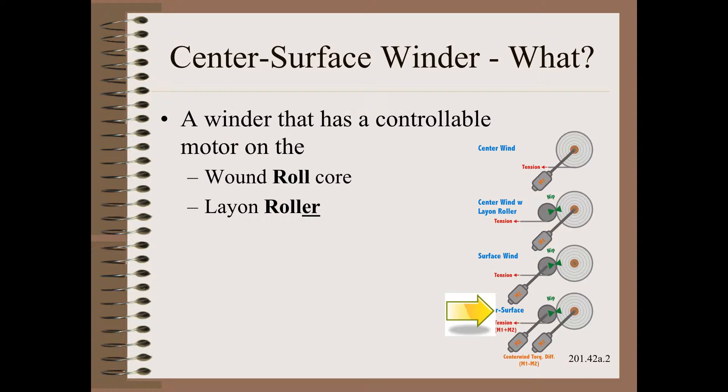Thus, a center surface wind has two motors, one attached to the roll and another to the roller.